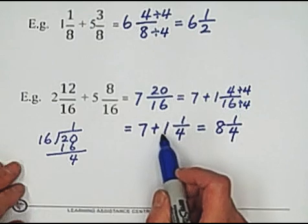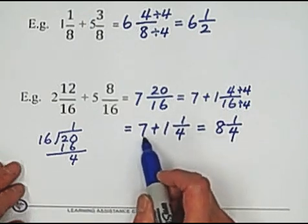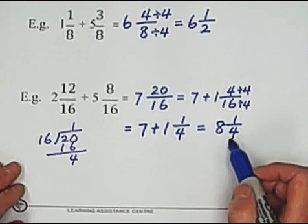Then, 4 over 16 can be simplified by dividing 4 top and bottom. So we got 7 plus 1 and 1 over 4, which equals 8 and 1 quarter. This is 7, this is 1, which is the whole number portion. Add the whole number portion, and the fraction part is 1 over 4.